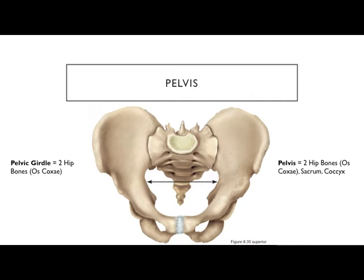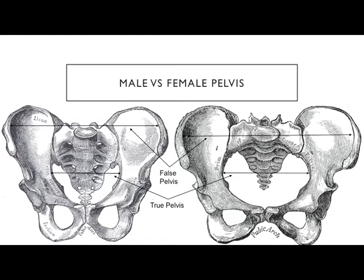The pelvic girdle consists of just the two hip bones. The pelvis includes the sacrum and coccyx as well — but sacrum and coccyx are part of the vertebral column, which is the axial skeleton. Put them together and you get the larger structure called the pelvis. This distinction makes a good exam question: what's the difference between a pelvis and a pelvic girdle, or which features are present in the pelvis but not the pelvic girdle?